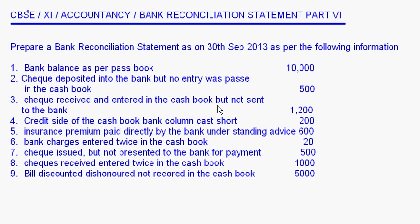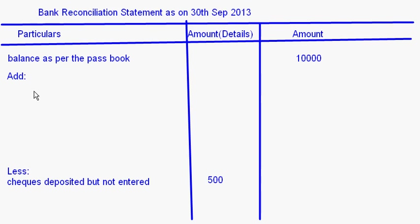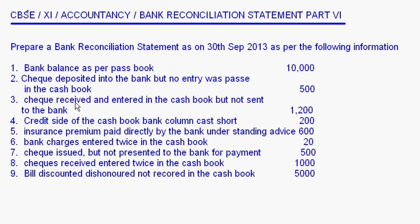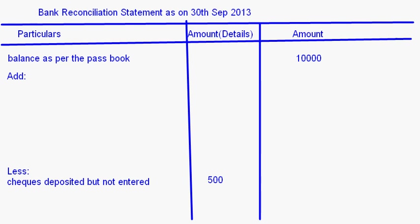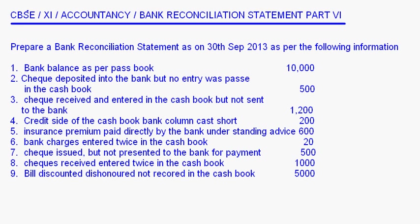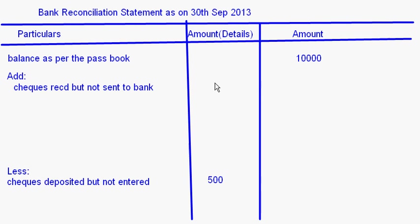Second: checks received and entered in the cash book but not sent to the bank. The cash book balance increases since they were entered, but it has not been sent to the bank, so the pass book balance is still less. The cash book balance is more, so this should be added. Checks received but not sent to bank: 1200 rupees.